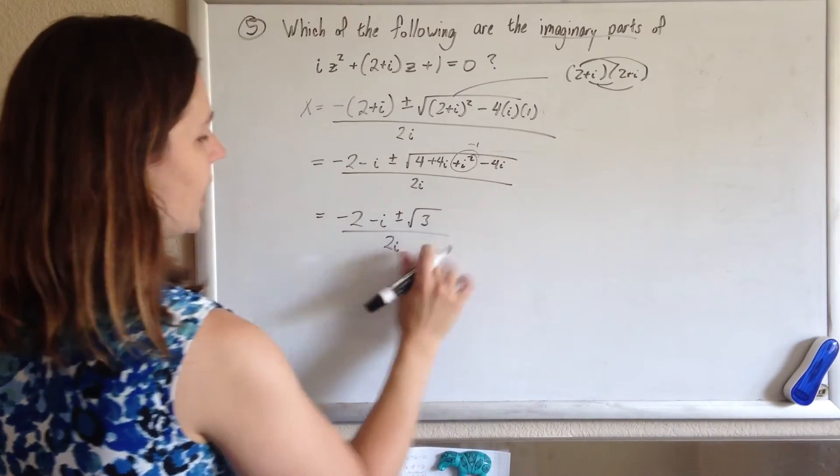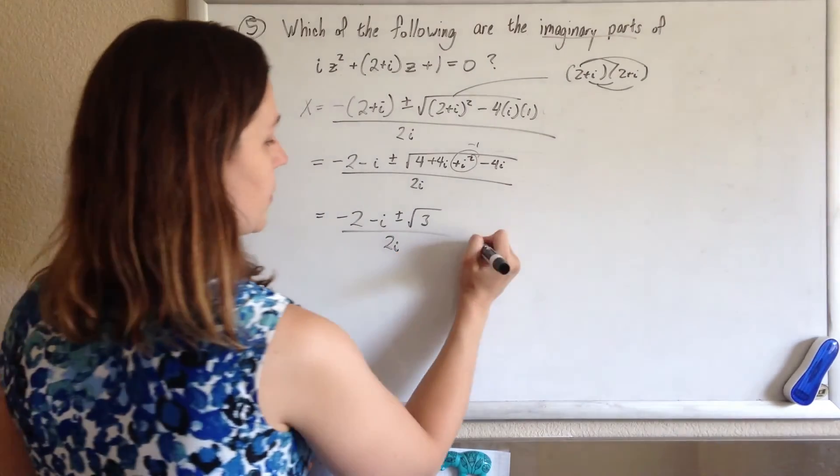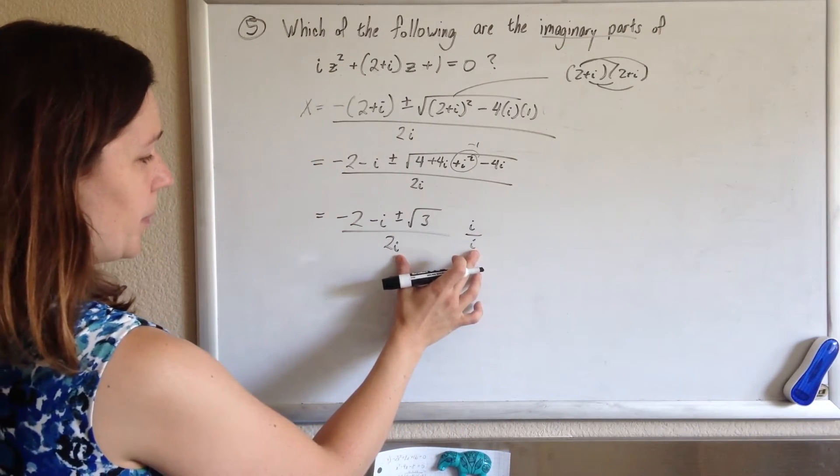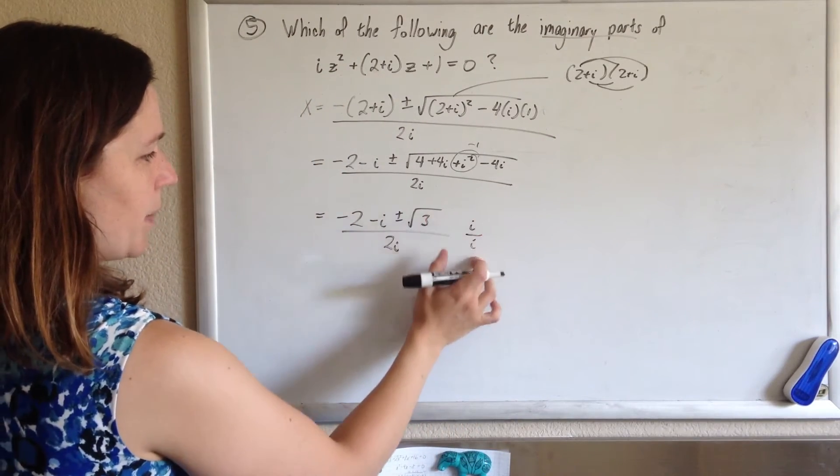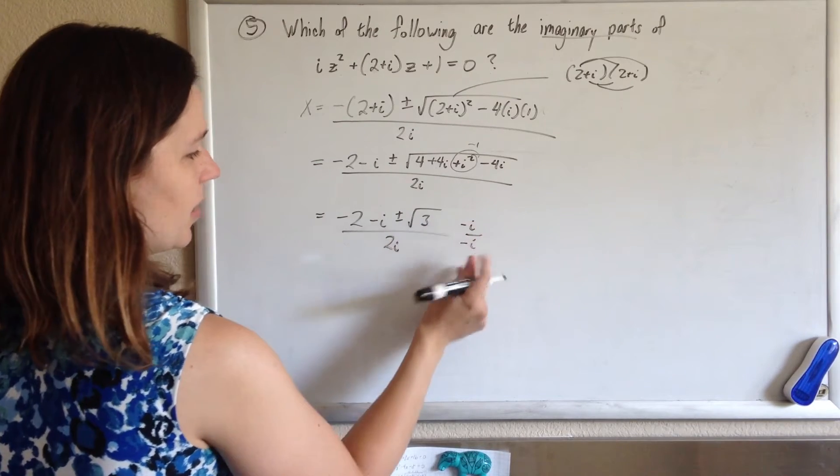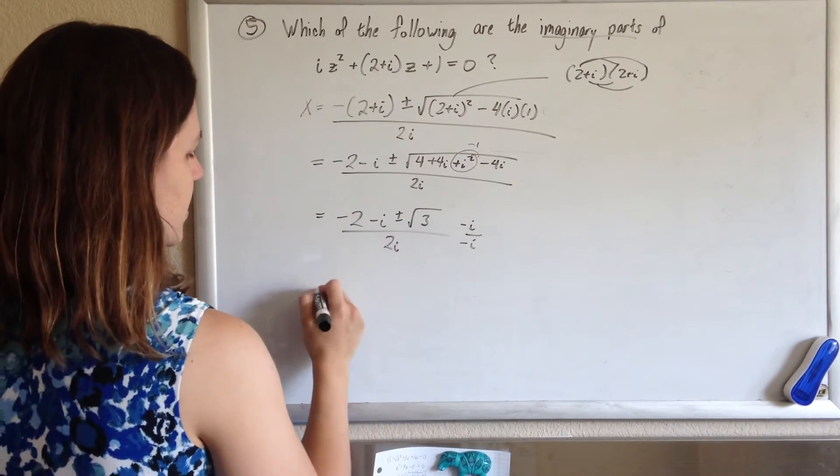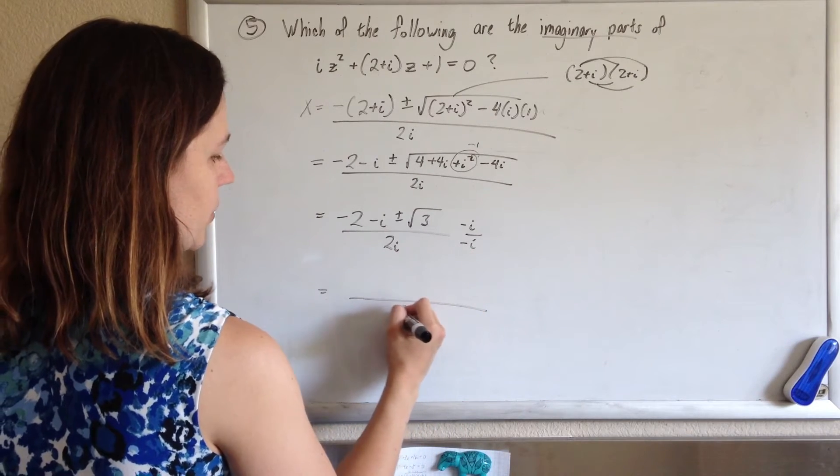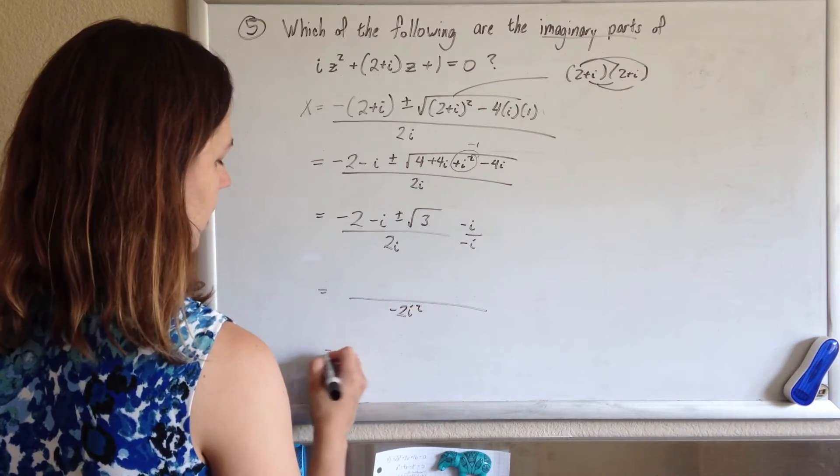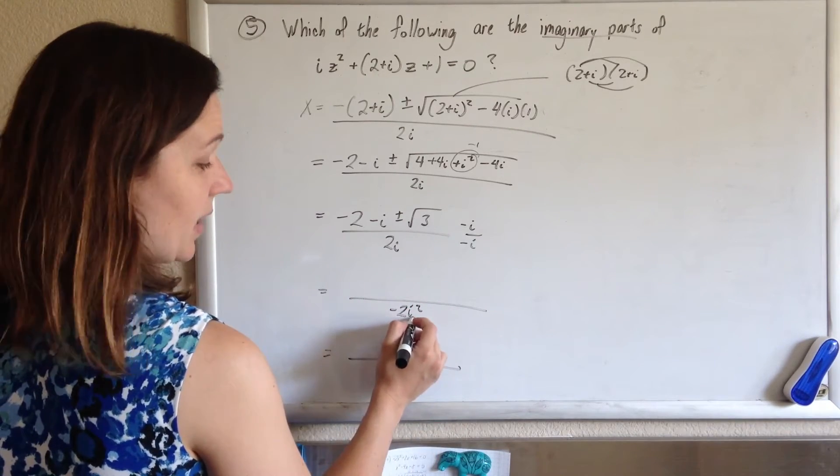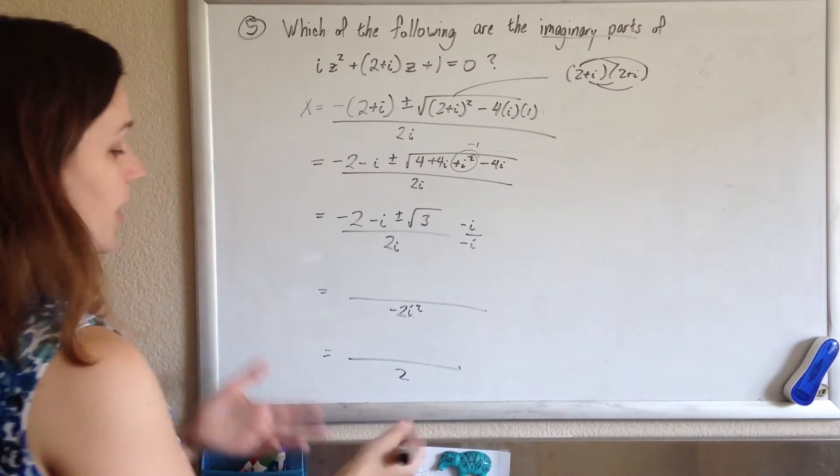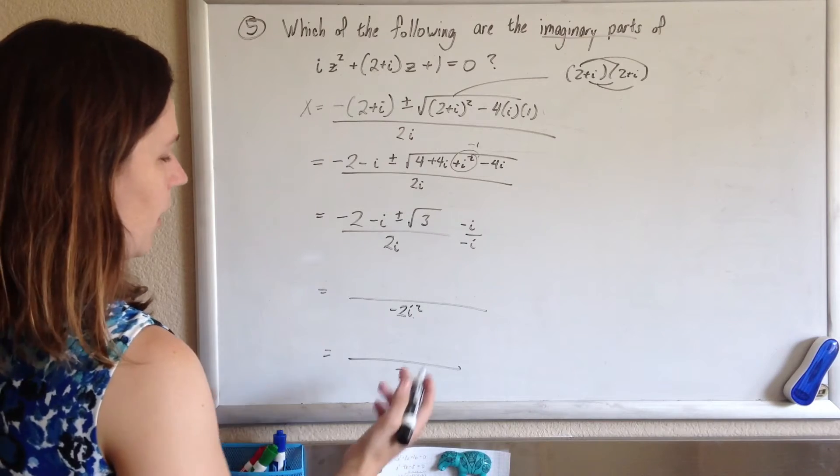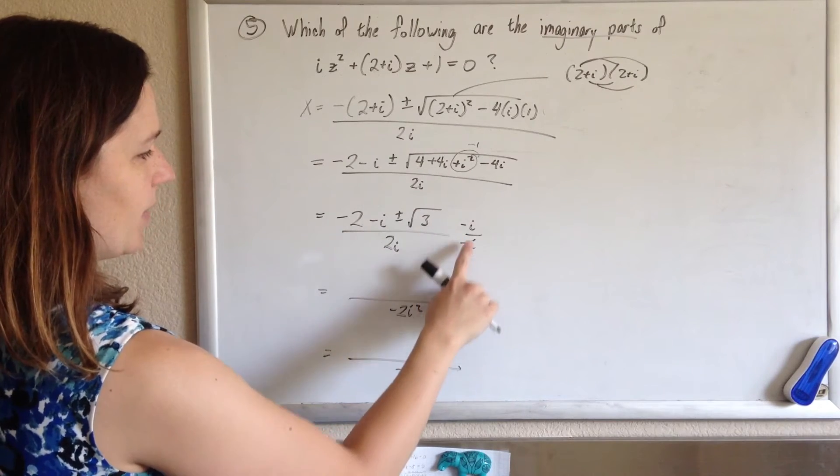And we don't like to keep i's in the denominator, just like we don't like to keep square roots in the denominator, so we're going to multiply top and bottom. You can either multiply by i, or you can do the true conjugate, the negative 2i, which actually works out really nicely, because when you do the bottom, you'll get negative 2i squared, so negative 2 times negative 1 would be a positive 2, then you don't have to worry about making the bottom positive.